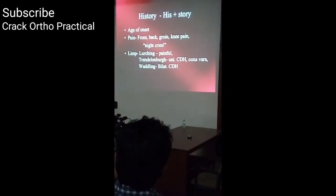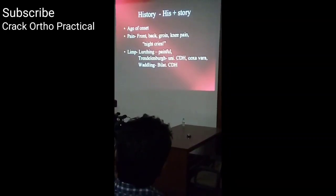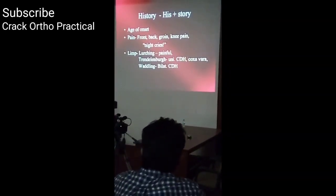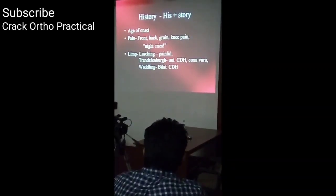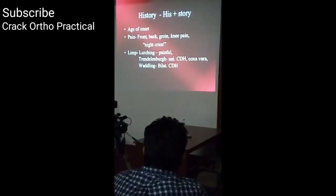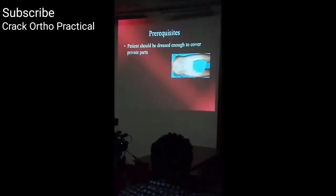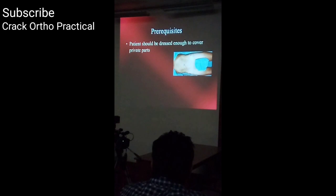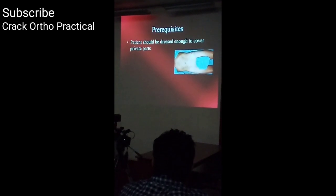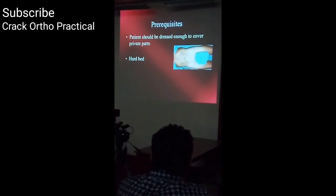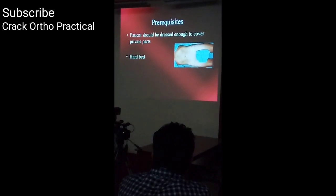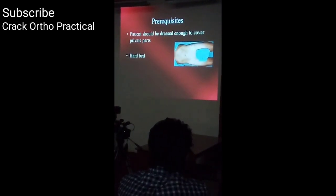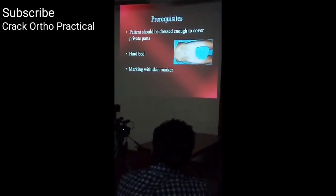When examining limping, observe the patient as they enter the clinic — the limping and lurching. The patient should be dressed enough to cover private parts, examined on a hard bed rather than a soft bed, where you cannot assess the deformity properly. Use a skin marker to mark the antero-superior iliac spine and other bony landmarks.